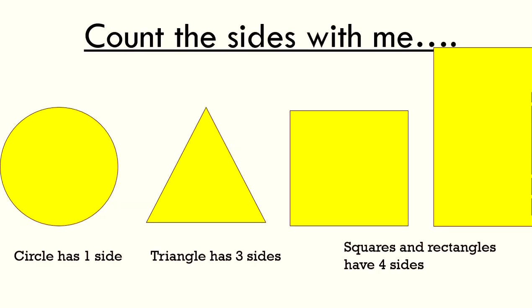Okay, count the sides with me. A circle has, say it with me, one side. Well done. A triangle has, that's it, three sides.